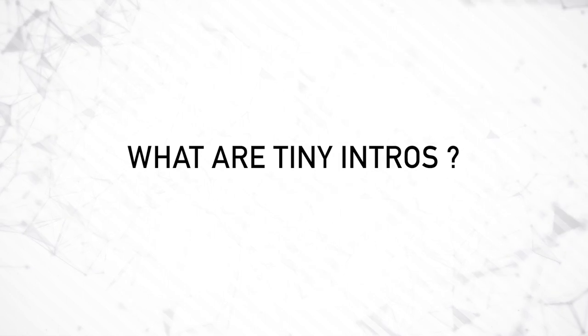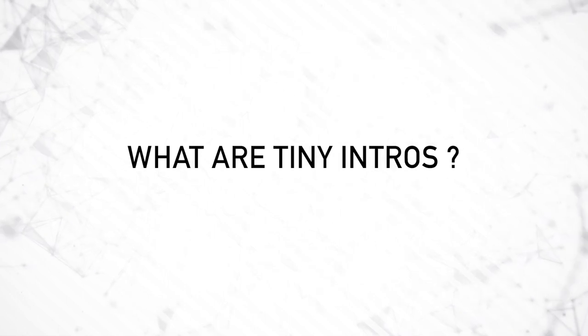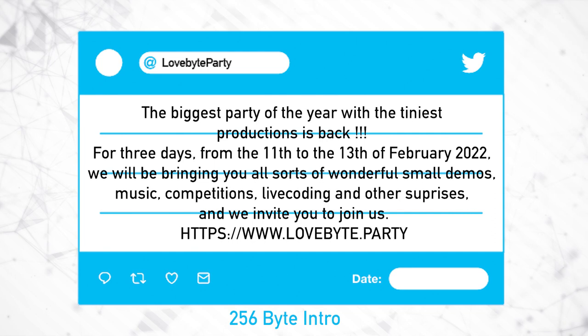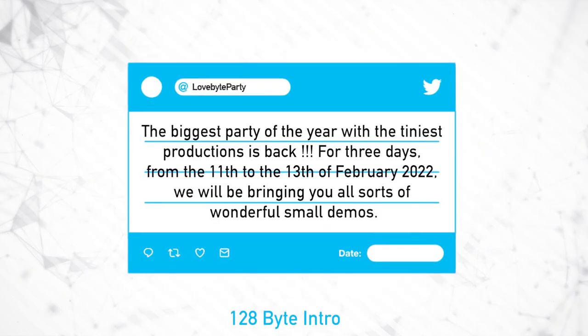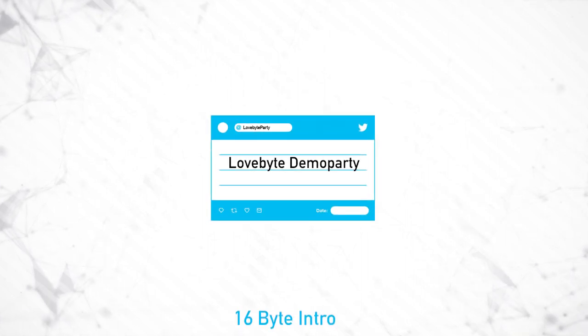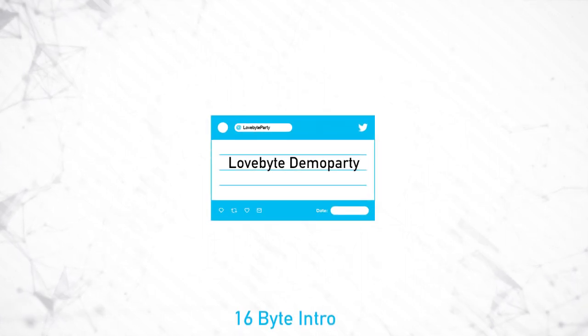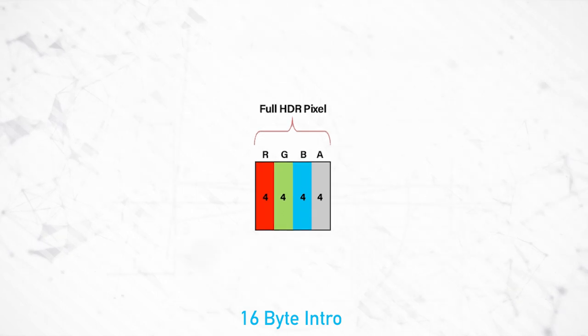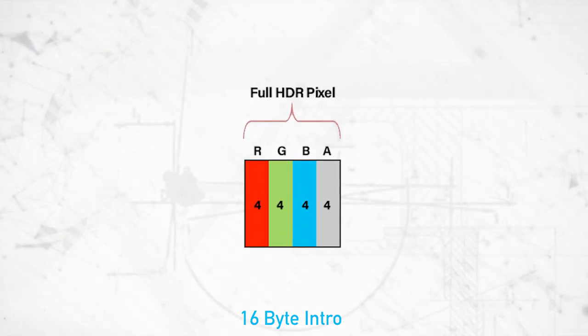256 bytes is a popular size for a size coded intro. That's about the size of a tweet. Now divide that tweet in half again and again until it's barely two words. In the same space as a single HDR pixel there is a hidden universe of creativity and mathematical complexity.